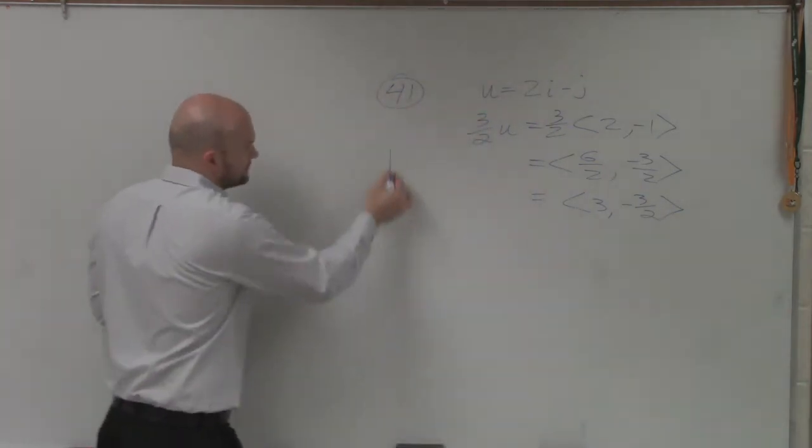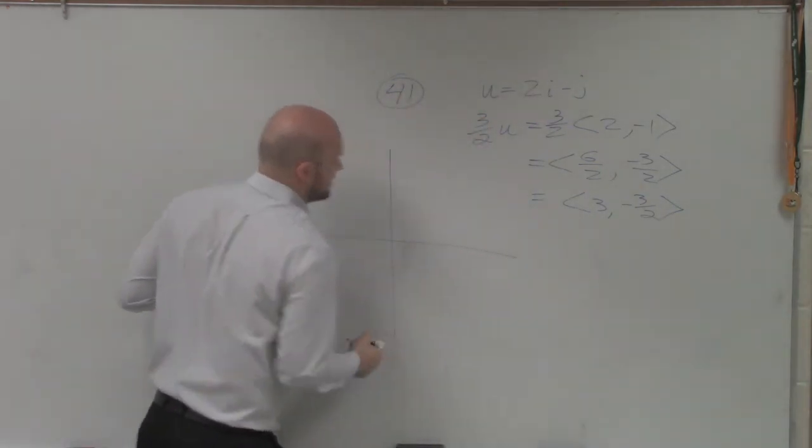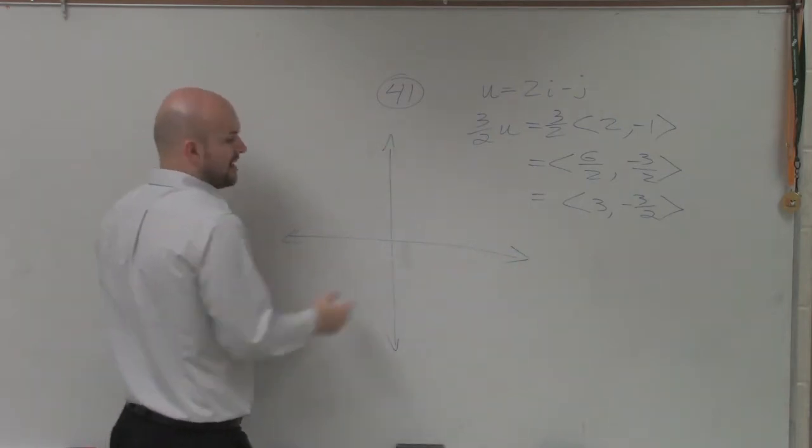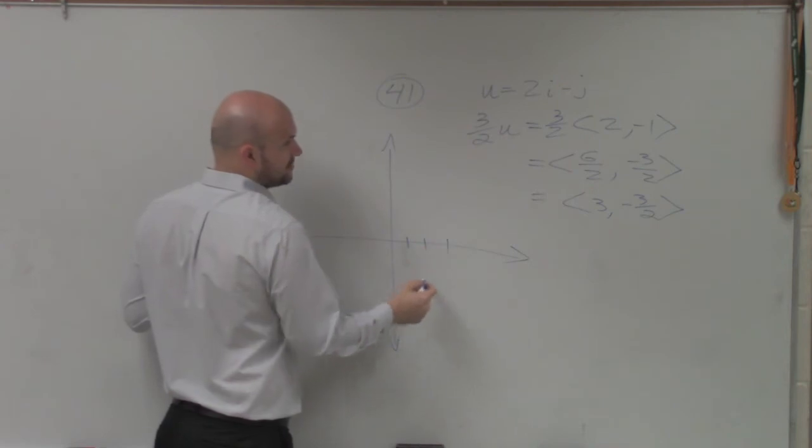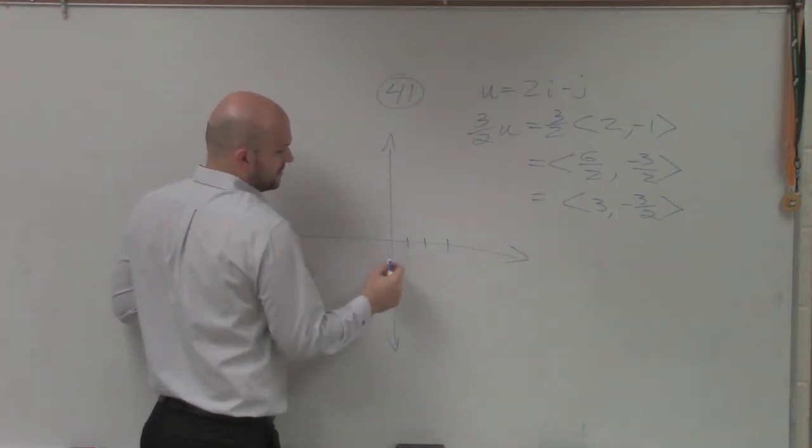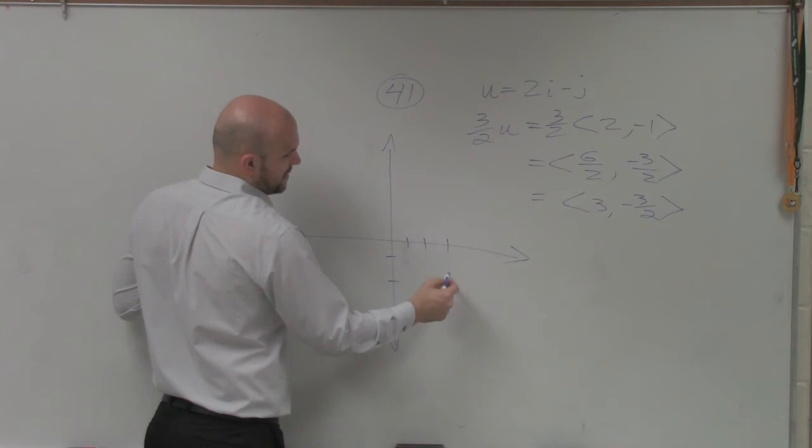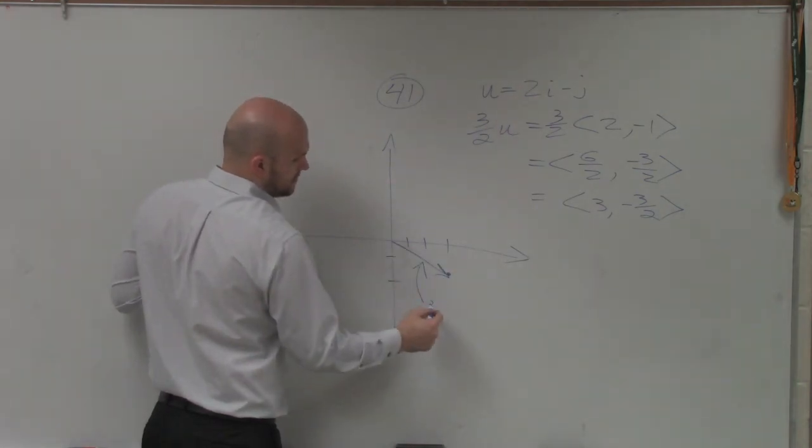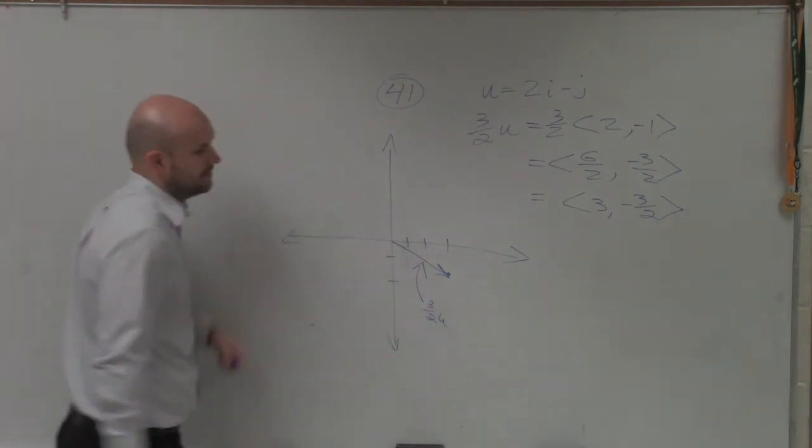now let's go ahead and graph it because it does ask you to graph, right? So now we go ahead and graph. I go over 3, 1, 2, 3, down negative 1 and 1 half. Down 1 and 1 half. So over 3, down 1 and 1 half. And there you go.